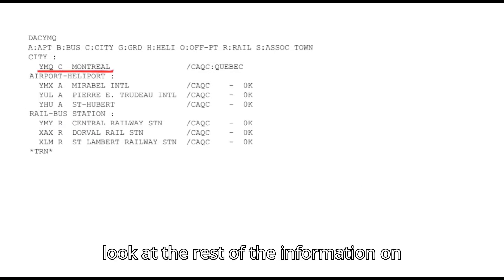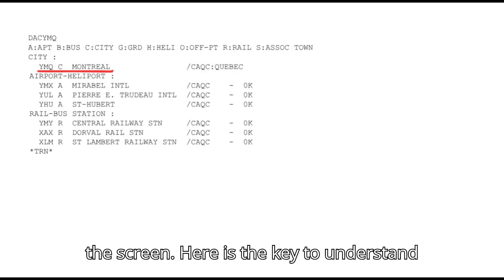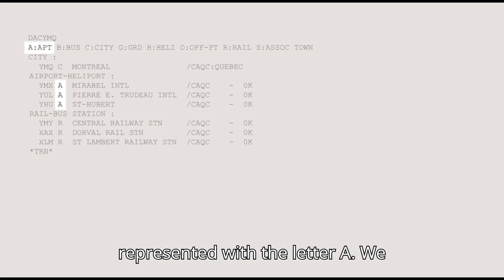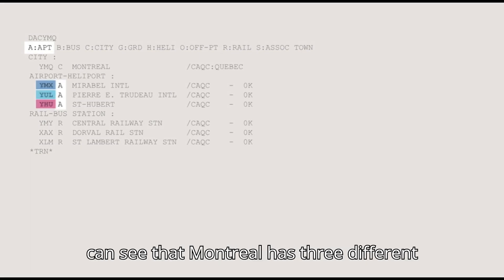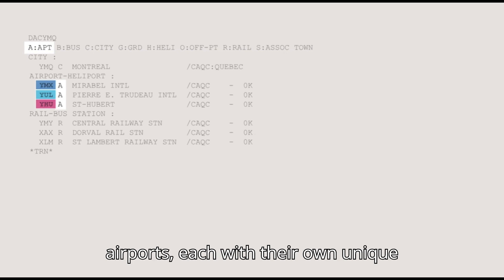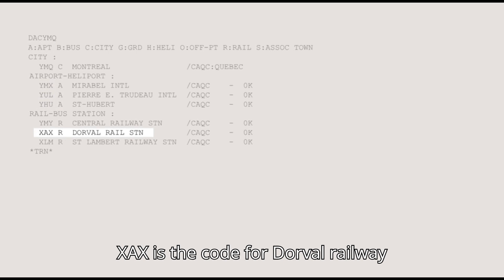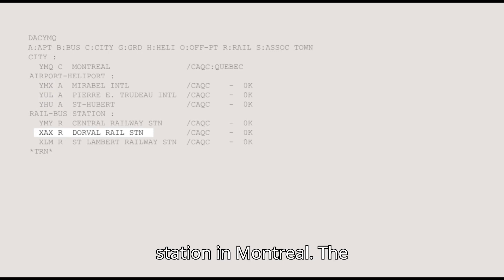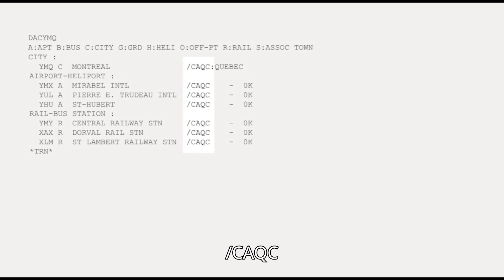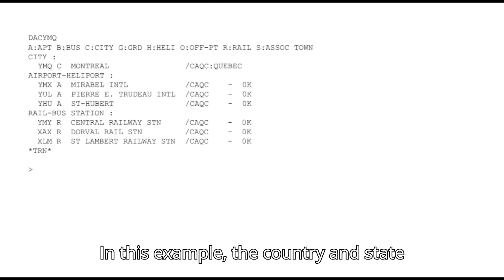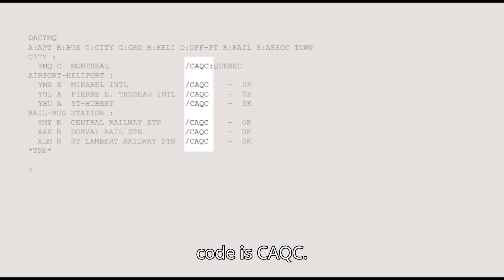Let's have a look at the rest of the information on the screen. Here is the key to understand the information displayed. Airports are represented with the letter A. We can see that Montreal has three different airports, each with their own unique code. The slash CAQC represents the country and the state code. In this example, the country and state code is CAQC.